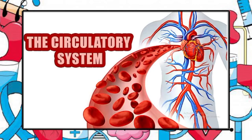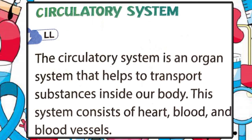Now let's understand the circulatory system. The circulatory system is the body system that moves blood around the body. The heart and all blood vessels make up the circulatory system. The circulatory system is an organ system that helps to transport substances inside our body, and this system consists of heart, blood and blood vessels.